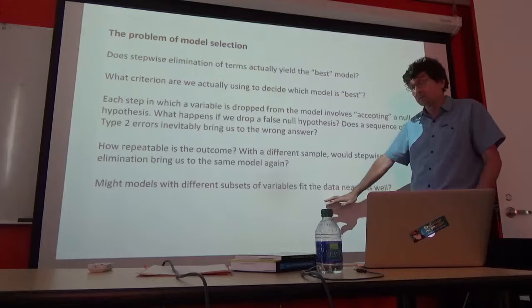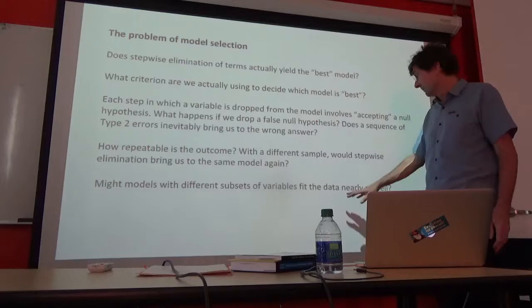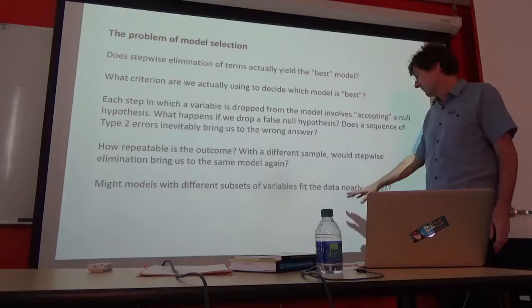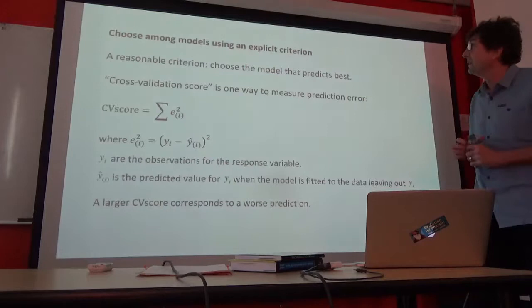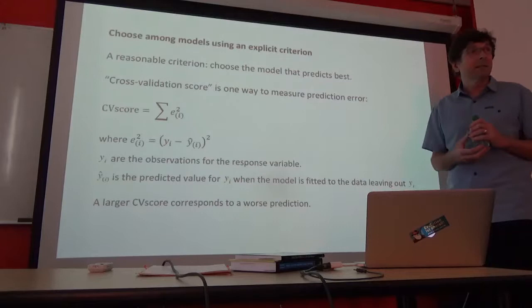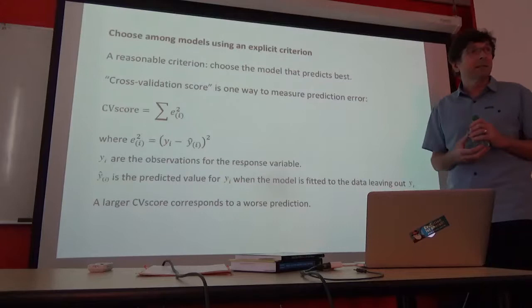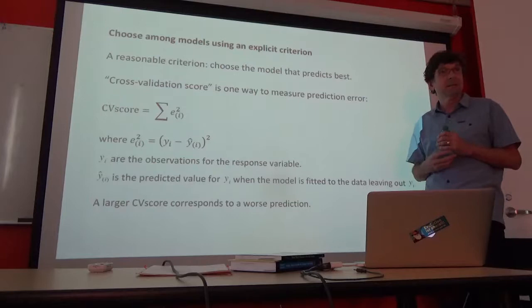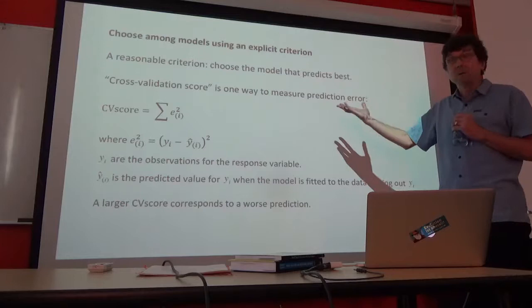That raises the question: is it possible that different subsets of variables might fit the data nearly equally well? How do we find out what they are? One reasonable criterion is that a problem with the tenth-order polynomial is that it does not predict well necessarily. A reasonable criterion for deciding what model to fit is to ask how well does it predict, and choose that as a potential criterion.